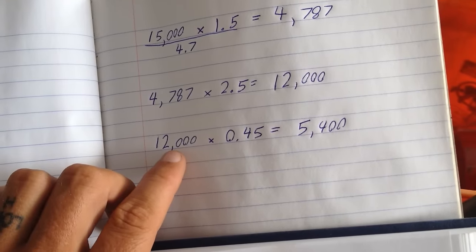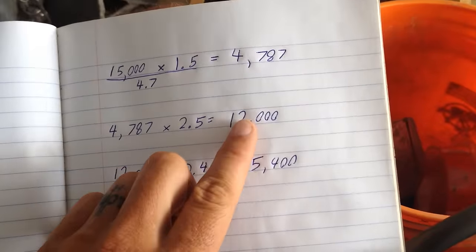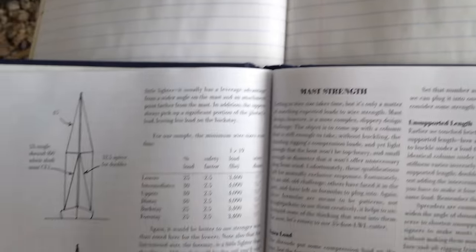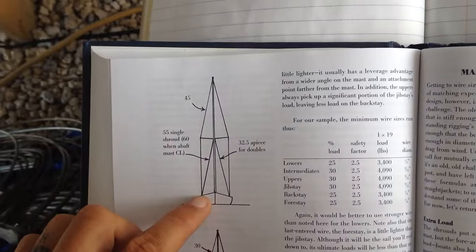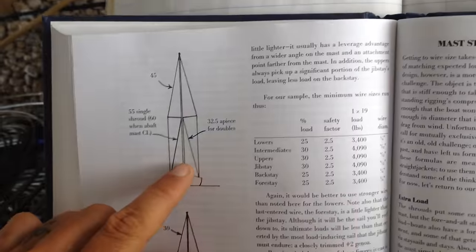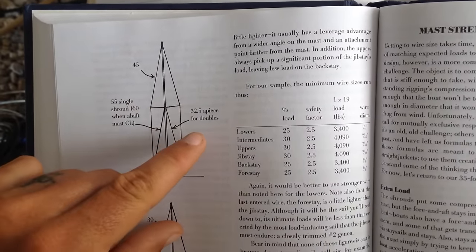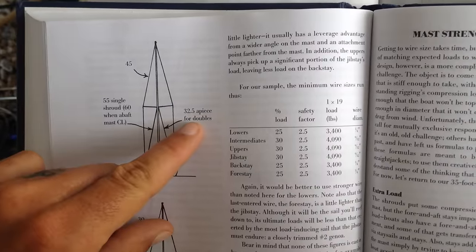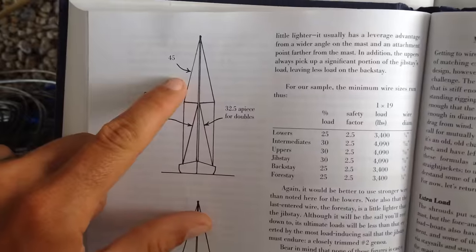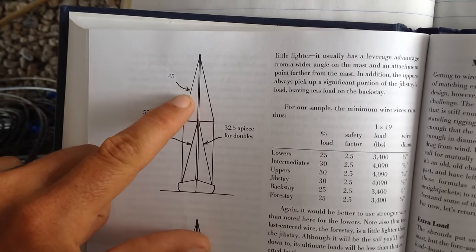And so at that point, we take the 12... Oh, and then I'll show you the next thing. So now we've got 12,000 pounds of force that we need to be able to deal with with the rigging. So here, he gives a cool image of how you can spread the load between the shrouds. So in this instance, a single spreader rig, he's saying if you have double lower shrouds, you do 32.5% of the total force can be dealt with by each shroud. And then with the single upper shrouds, you're going to want 45% of all that load to be dealt with by that shroud.